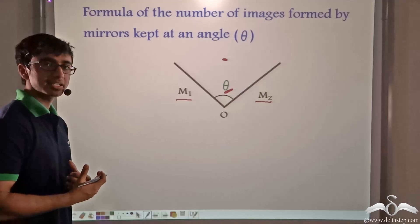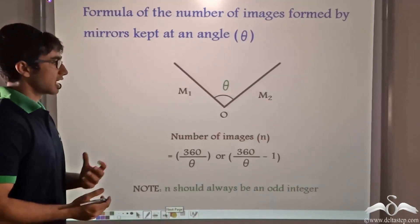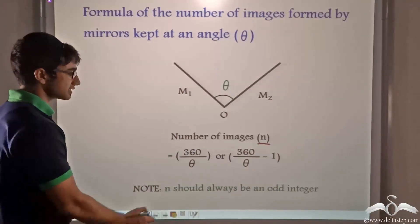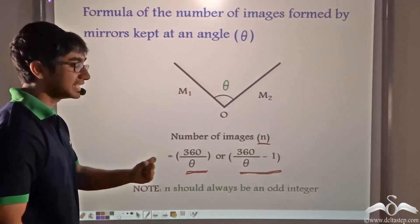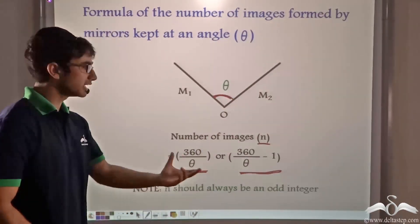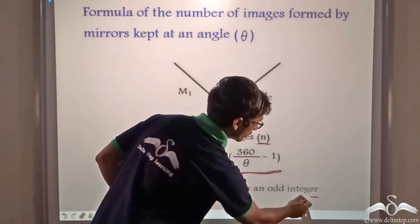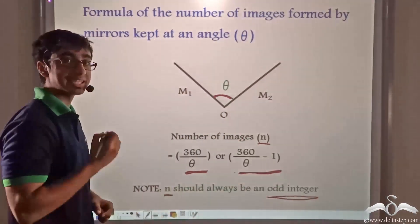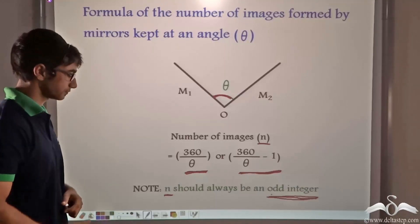So what determines the number of images? This is determined by a very simple formula. The number of images N is given by 360/θ or 360/θ minus 1, where theta is the angle formed between the two mirrors. Now why do we have two formulae? Always remember that N should be an odd integer. Depending on the value we obtain from these two formulae, we choose the value of N which is an odd integer. This is the reason why we have two formulae.